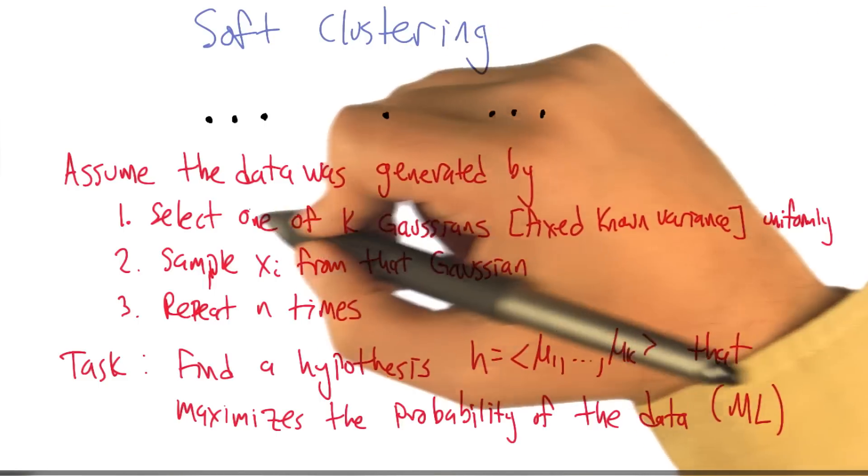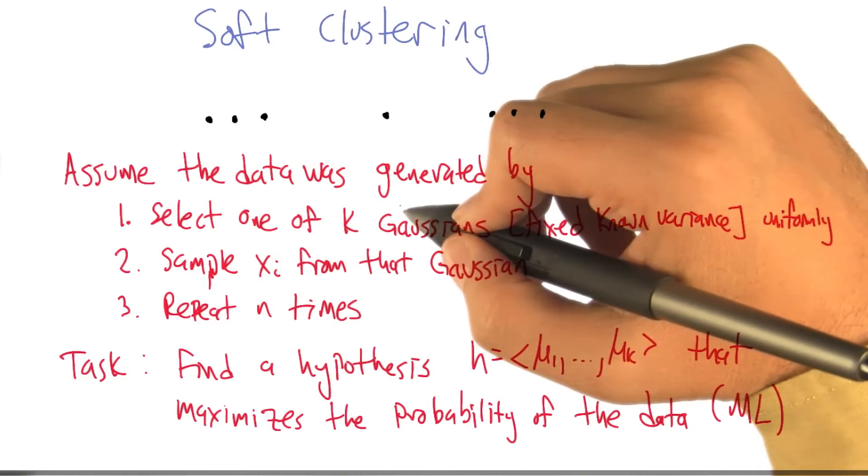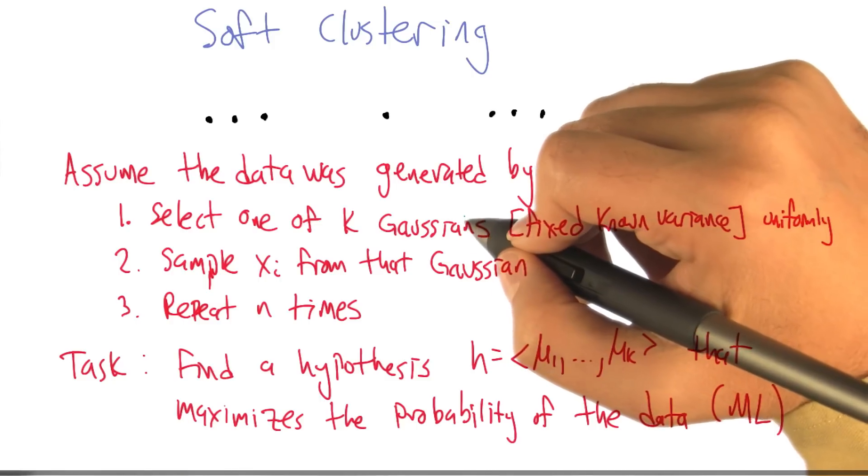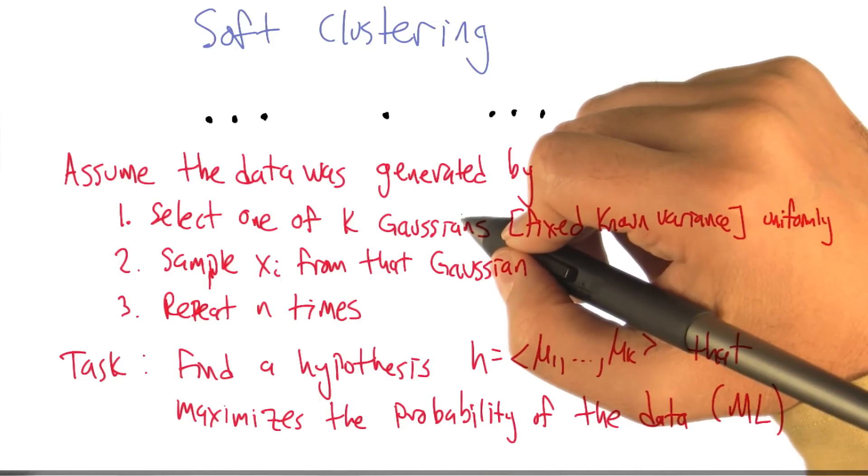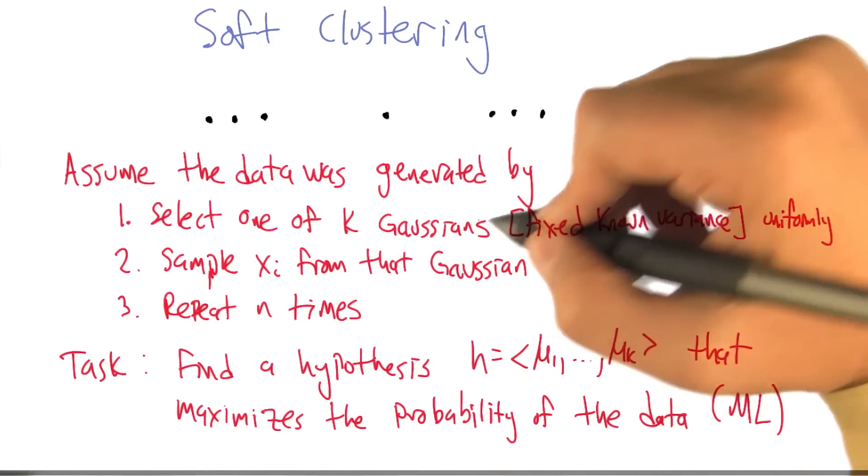Assume that the data was generated by, what happens is we're going to select one of k possible Gaussian distributions. We're going to imagine that the data is going to be generated by draws from Gaussians, from normals.